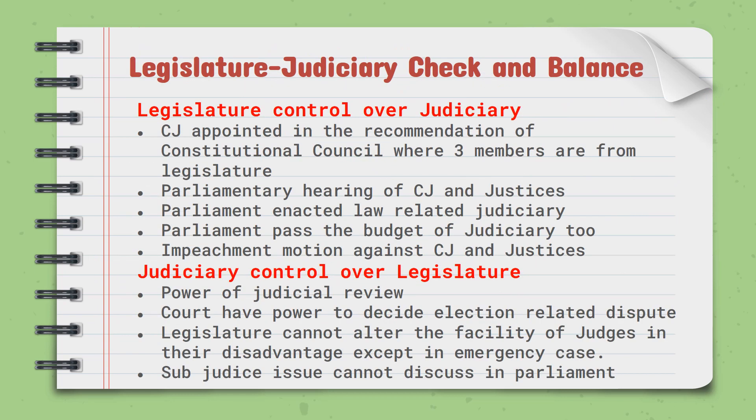Let's talk about the relation between legislature and judiciary from a check and balance perspective. Regarding legislature's control over the judiciary: the Chief Justice is appointed on the recommendation of the Constitutional Council, where three members are from the legislature — the Speaker, Deputy Speaker, and Chairman of the National Assembly. There is a parliamentary hearing for the Chief Justice and justices. Parliament enacts laws related to the judiciary, passes the judiciary's budget, and can pass an impeachment motion against the Chief Justice and other justices.